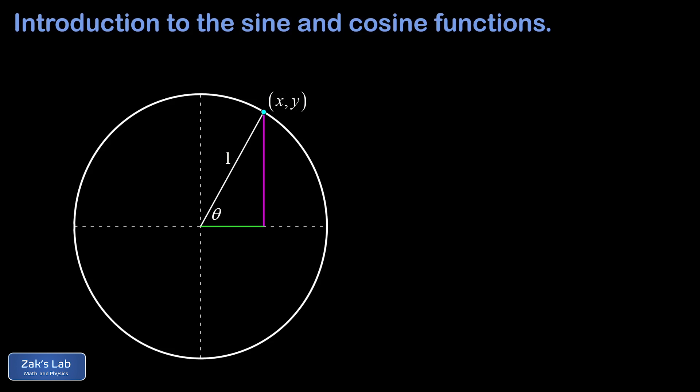Next we're focusing on graphing the sine and cosine functions as functions of theta on a two-dimensional plot. The y-component of the radius of the unit circle is colored magenta, and the x-component is colored green. The length of the green x-component tells us the value of the cosine function — with a minus sign when it's left of the y-axis. The length of the y-component tells us the value of sine theta, with a minus sign when it's below the x-axis.